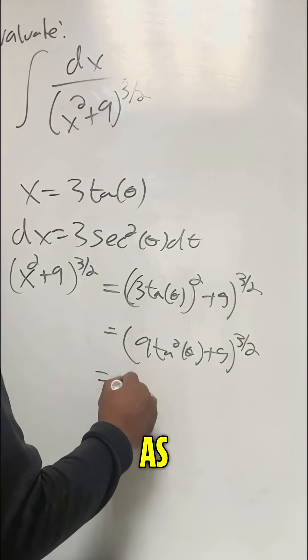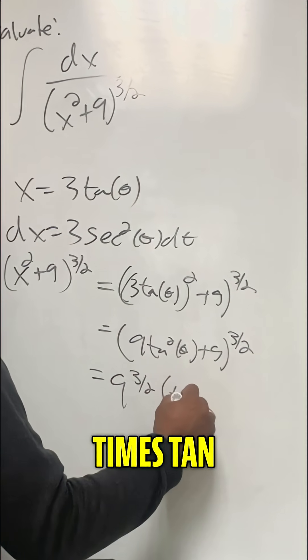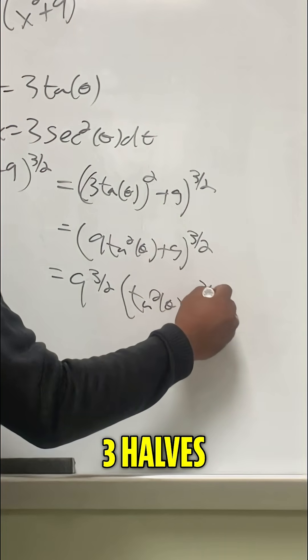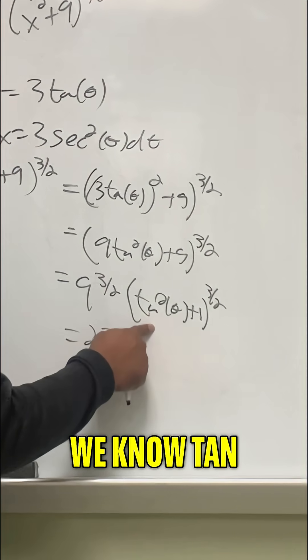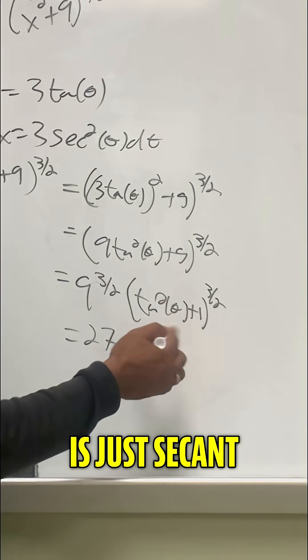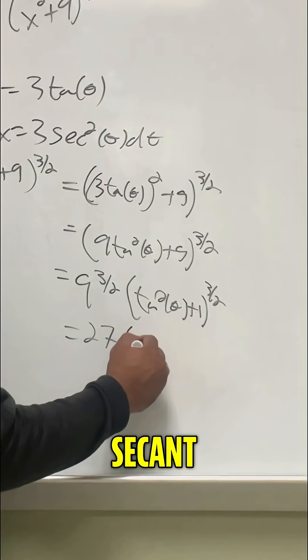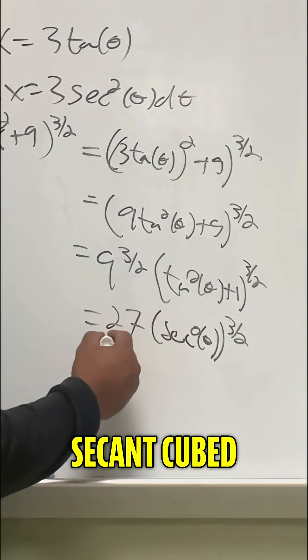Factoring out a 9, we get this is 9 to the 3 halves times tan squared of theta plus 1 to the 3 halves. This gives me 27 times. We know tan squared of theta plus 1 is just secant squared. And so that's secant squared of theta to the 3 halves, which is just secant cubed.